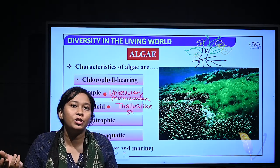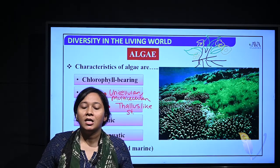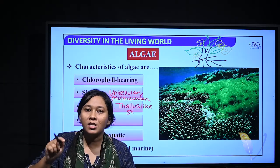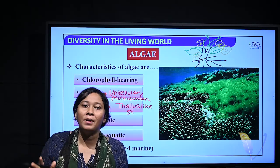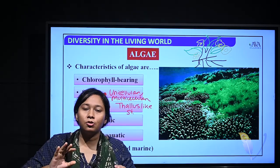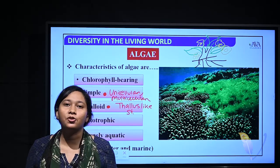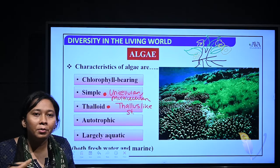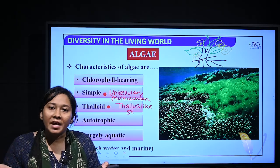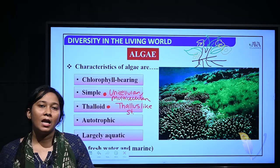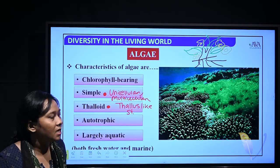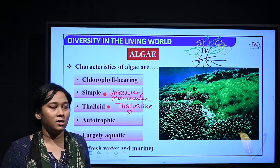That's why algae have a structure called a thallus-like structure. Similar to fungi where hyphae form a network called mycelium, in algae small structures combine to form a thallus-like structure. In thallus, we cannot distinguish roots, stems, or leaves. That is why they are called thallophytes — 'thallo' means thallus and 'phyte' means plants.